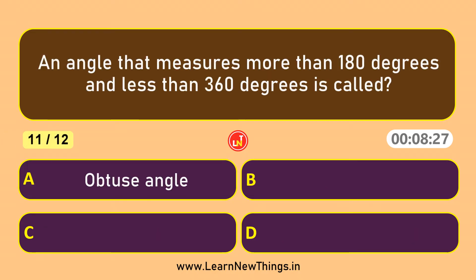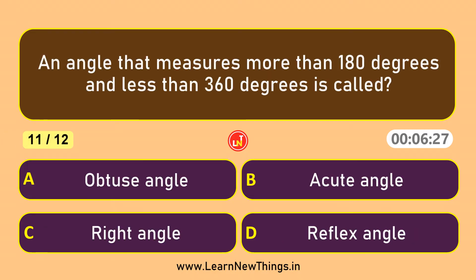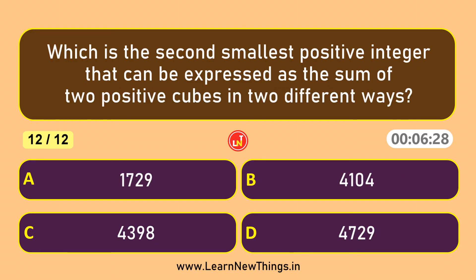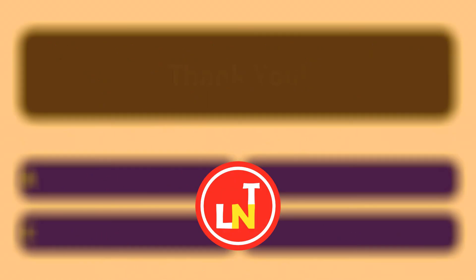An angle that measures more than 180 degrees and less than 360 degrees is called a reflex angle. Which is the second smallest positive integer that can be expressed as the sum of two positive cubes in two different ways? Four thousand one hundred and four.